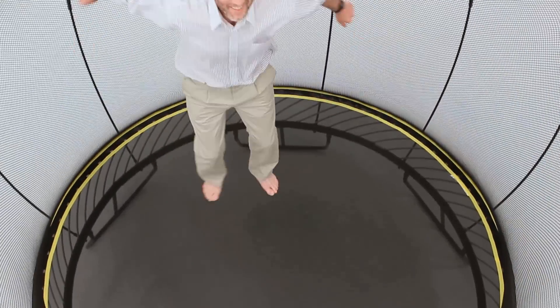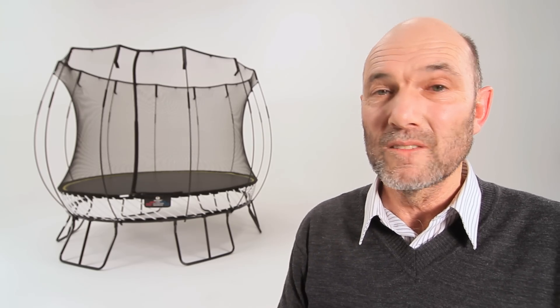A conventional trampoline mat, if you bounce right at the edge, the mat moves sideways to some extent. It might be in and out or it might be diagonally depending on where it is on the mat that you land.